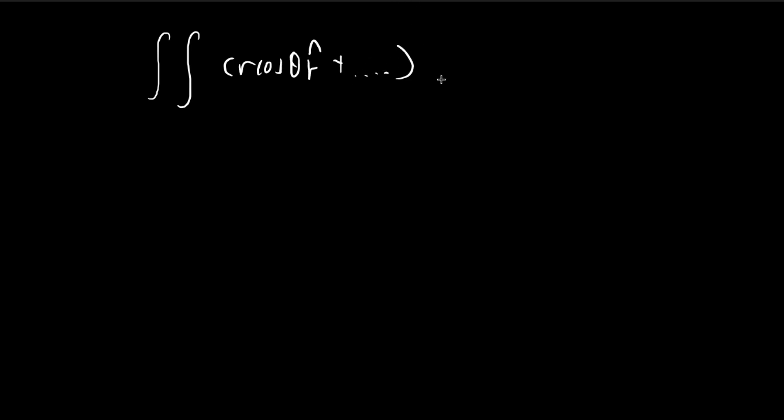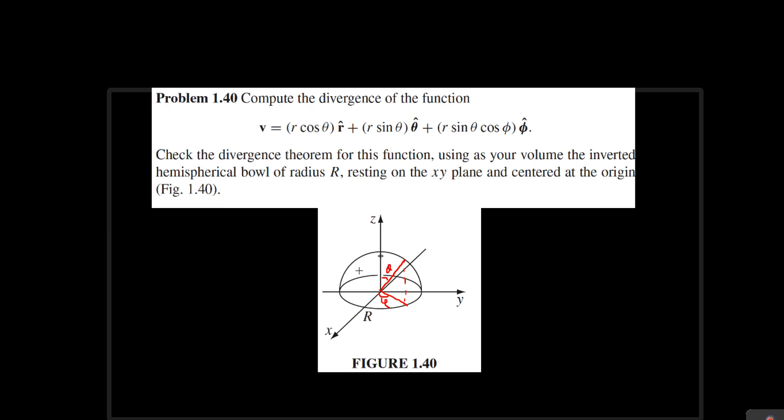And we're not going to have to deal with those because the dA, so remember for the surface integral, we have the vector field dot dA. And dA has the magnitude of a tiny piece of the surface over here, multiplied by the vector that is perpendicular to the surface. And as you know, for a spherical shell, the direction that is perpendicular to the surface is just the r direction. So it's just r hat.